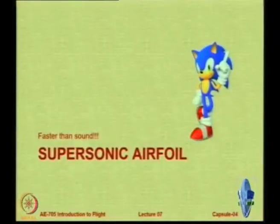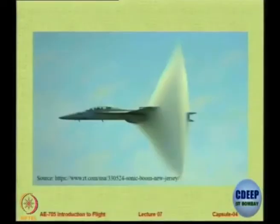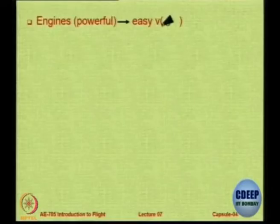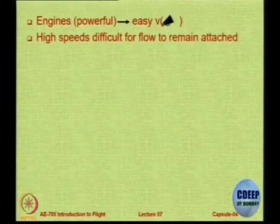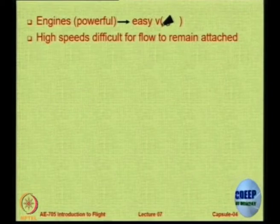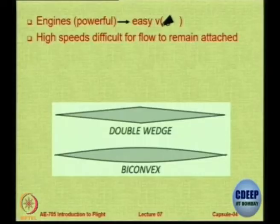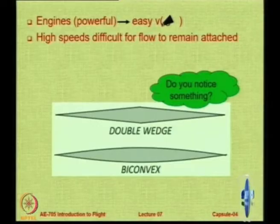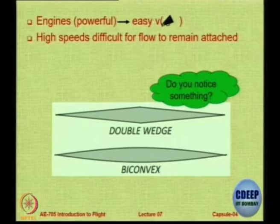Moving on, let us look at aerofoils designed for aircraft that fly faster than the speed of sound. When you fly at a speed greater than the speed of sound you will have a shock wave, so the aerofoil must handle shock waves. Typically, aerofoils used for supersonic aircraft are double wedge or biconvex. A notable feature is that the leading edge is sharp and the trailing edge is also sharp — unlike conventional aerofoils.